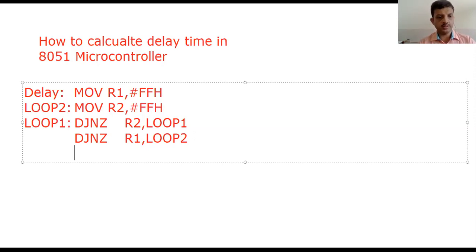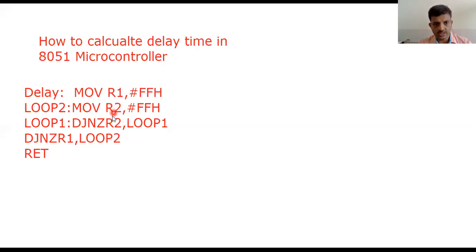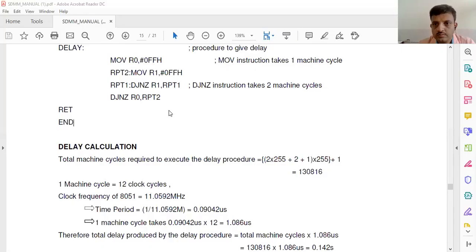The code ends here. This is a written instruction for the delay function — this is how the instruction set is used to generate nested looping. Register R1 is used as one counter and R2 is used as another counter. Initially the inner loop, which uses R2, is executed a certain number of times. After completion, the second loop continues, reloads the first register, decrements R1, and reloads R2, and so on.